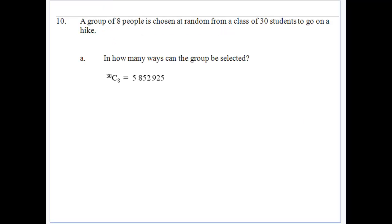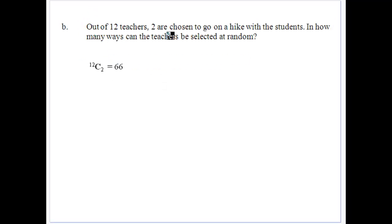And this one, we've got a group of students who are going to go on a hike. And we've got to get a group of eight from 30. So we can get that 55,852,925 ways. Out of the 12 teachers, two are chosen to go on a hike. How many ways can the teachers be selected? Well, that'd be groups of two out of 12 gives us 66 of those.